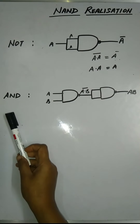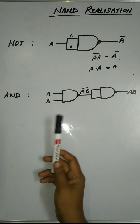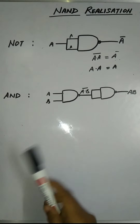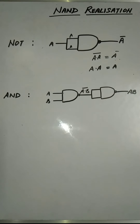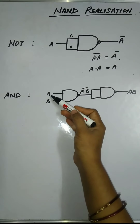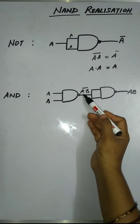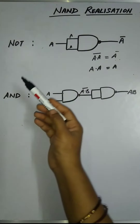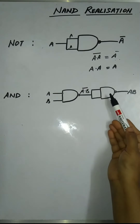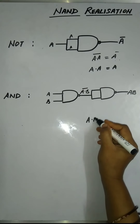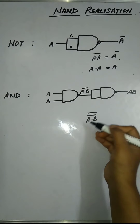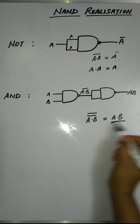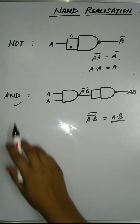Next gate is AND gate. The realization of AND gate using NAND gate can be done by using two NAND gates. As we know, by taking NOT of NAND gate output, we get AND gate. So taking two inputs A and B, the first NAND gate produces A dot B whole bar. Passing this through a NOT gate gives A dot B double complement, and since double complements cancel, we get A dot B — which is the functionality of AND gate.